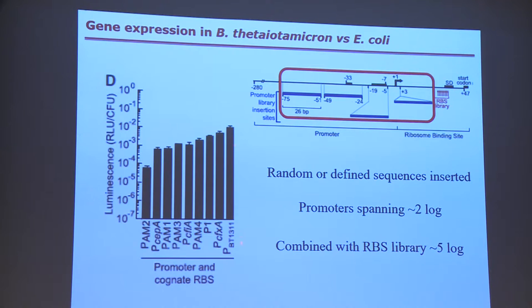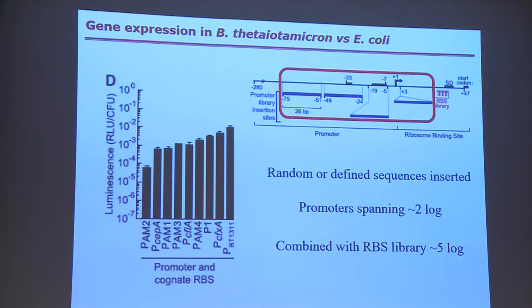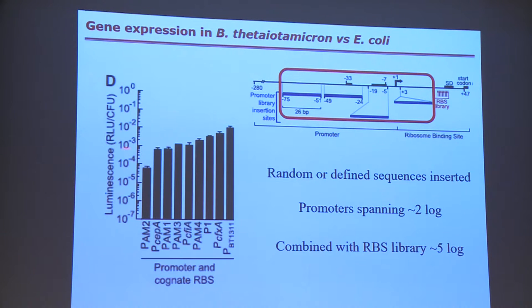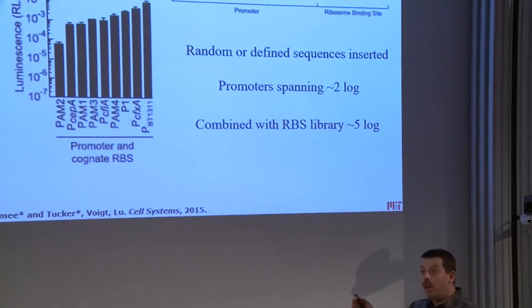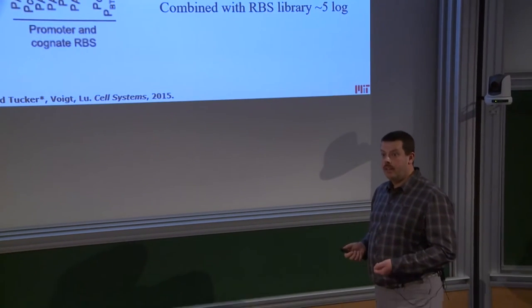Our starting promoter was PBT1311. We also cloned a few other Theta promoters expected to work well and introduced variability in various regions — either replacing them with sequences from other promoters or completely random sequences. The different constitutive promoters we built span about two logs of magnitude in expression level. When combined with different translation strengths from our ribosome binding site library, we get about five logs of difference overall — about four logs more than was previously possible.